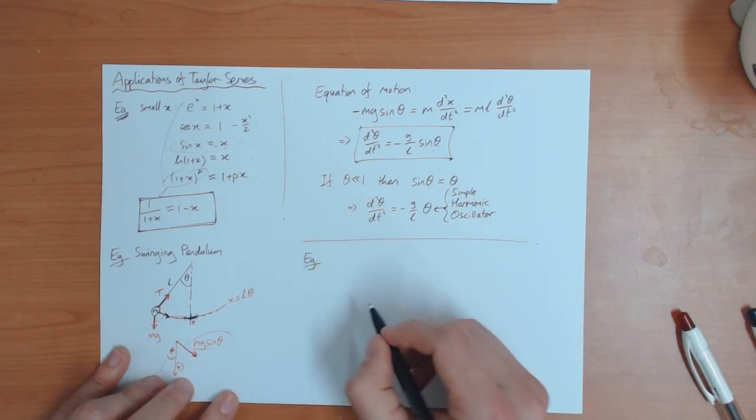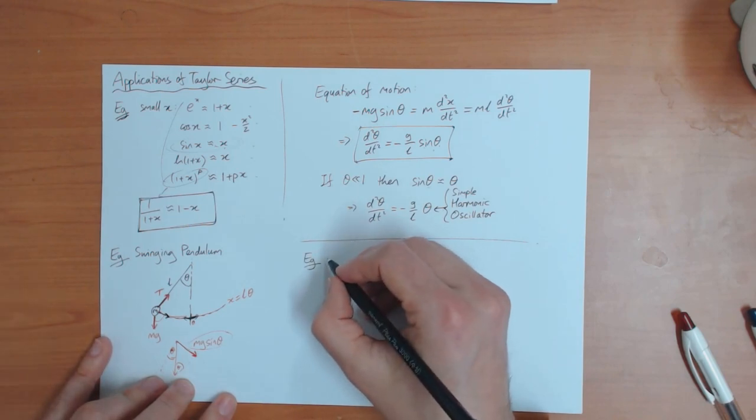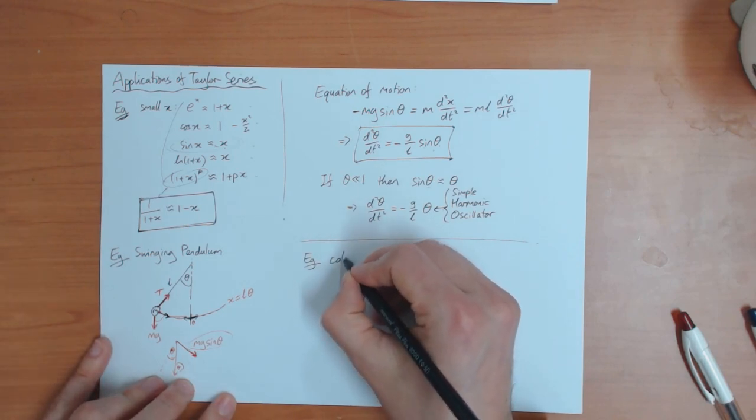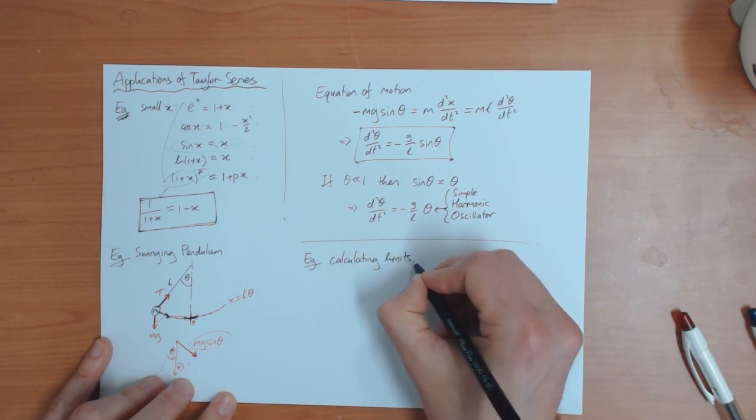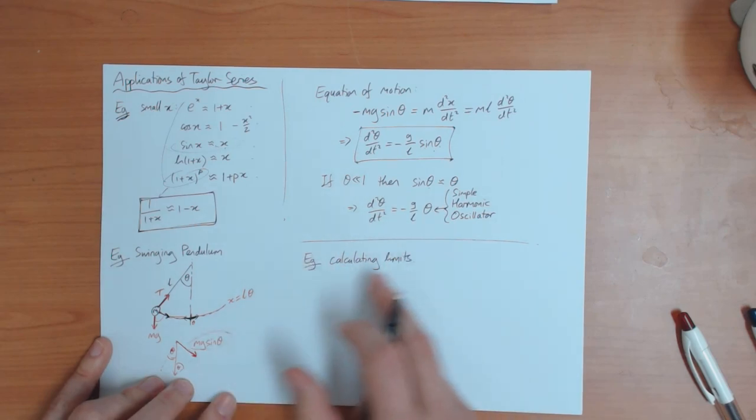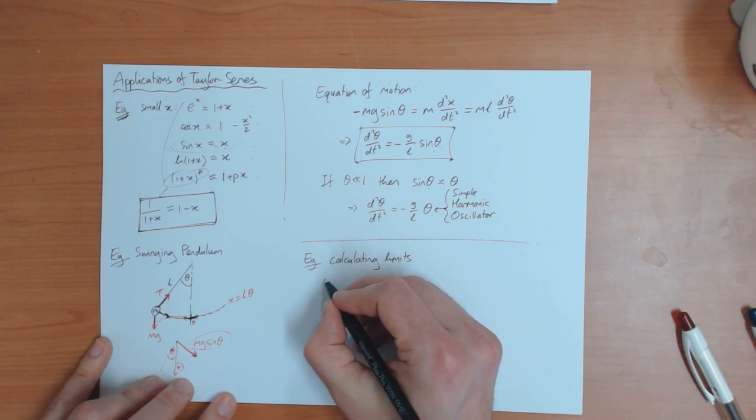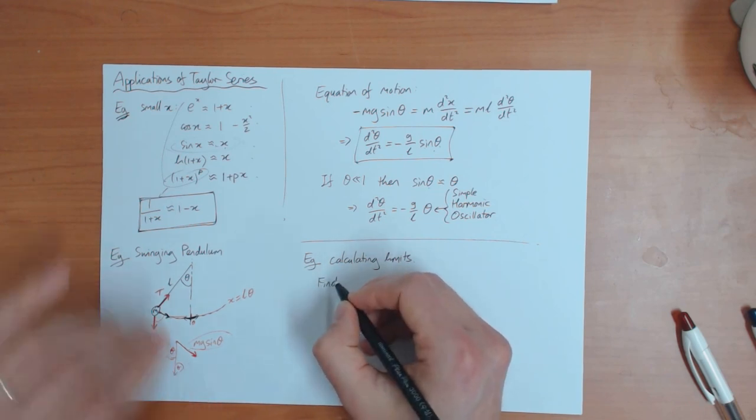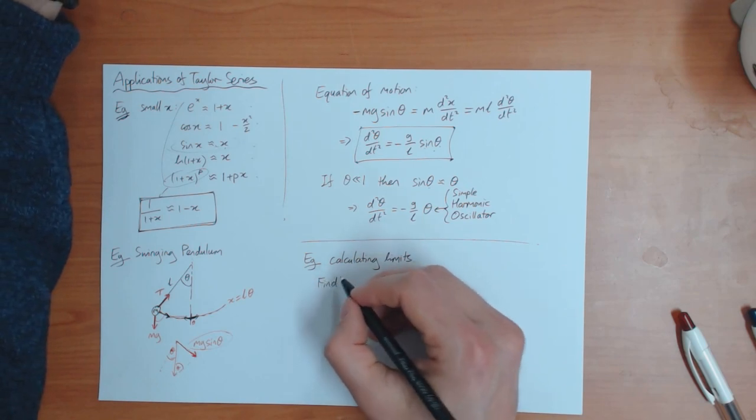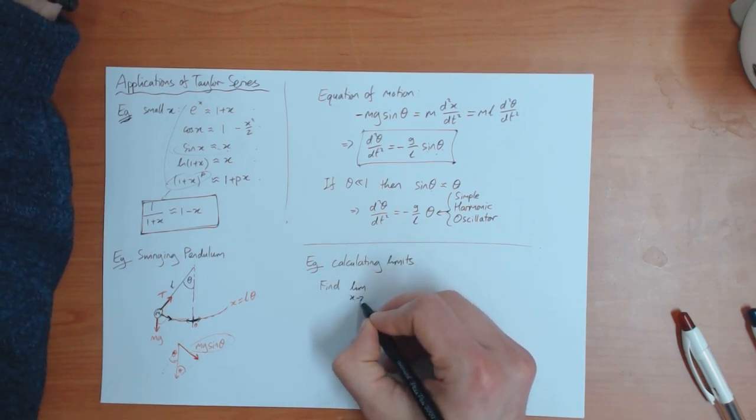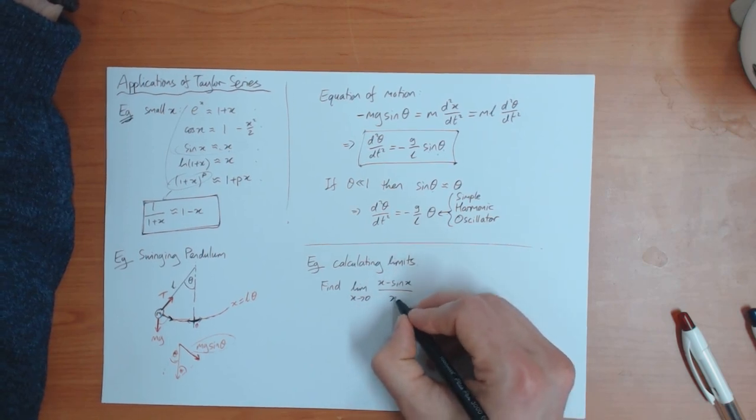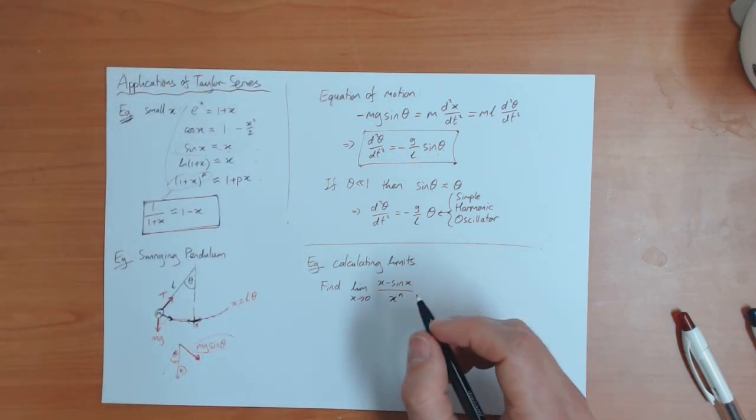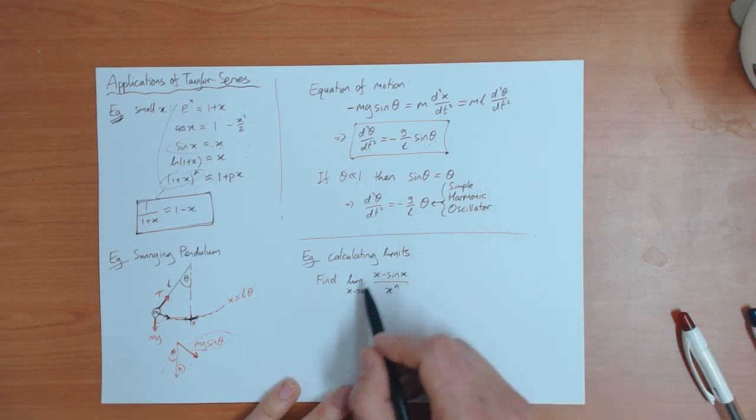A final example, which again is sometimes useful, is for calculating limits. And there's one question on the practice sheet about this. So find, here's an example of a question you might be asked. Let's suppose I ask you to find the limit as x goes to zero of x minus sine x divided by x to the power n, where n is some integer, let's say.